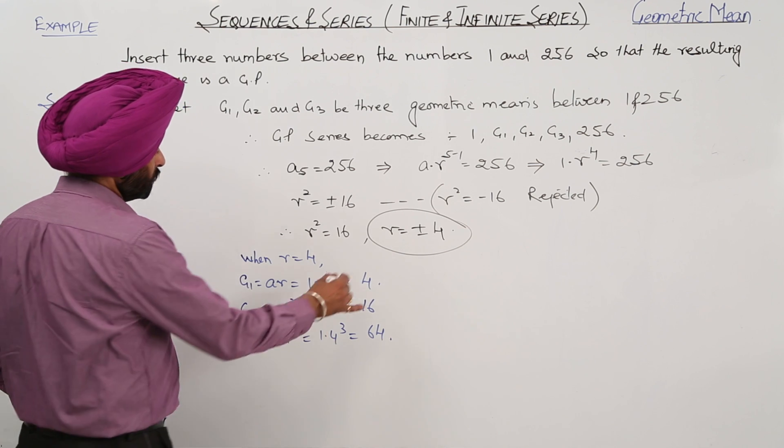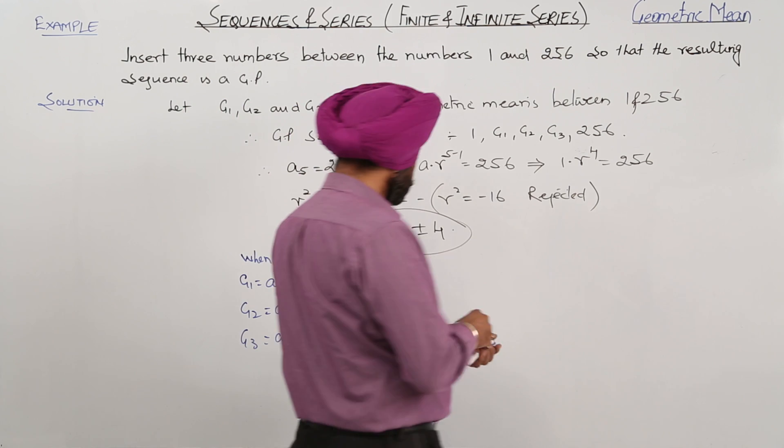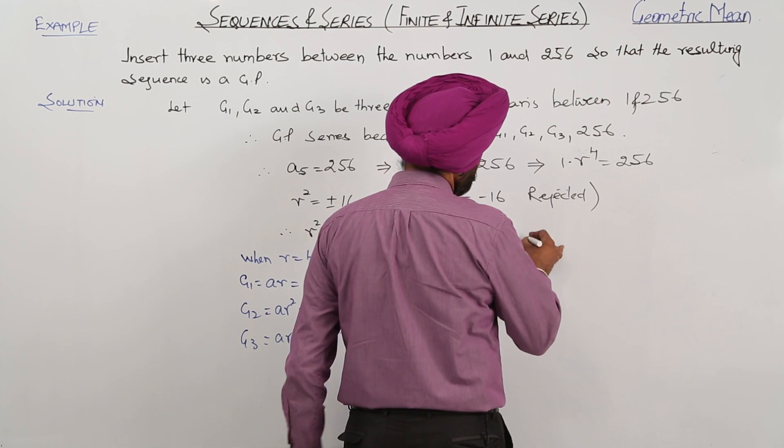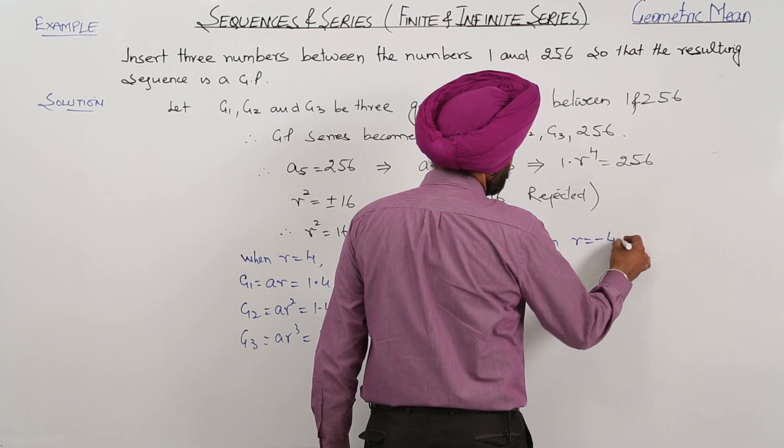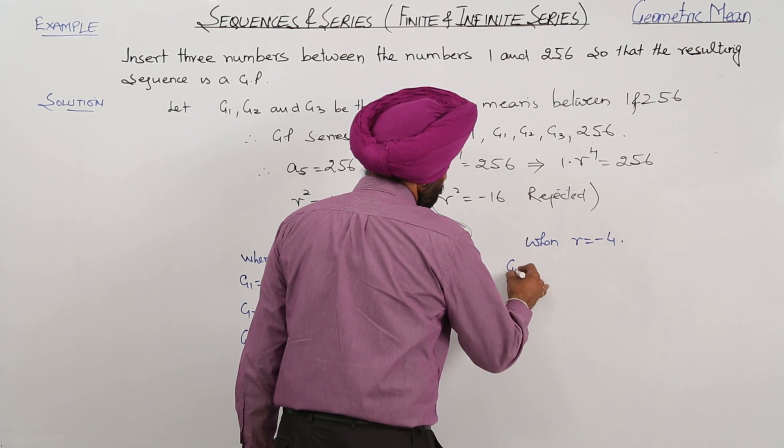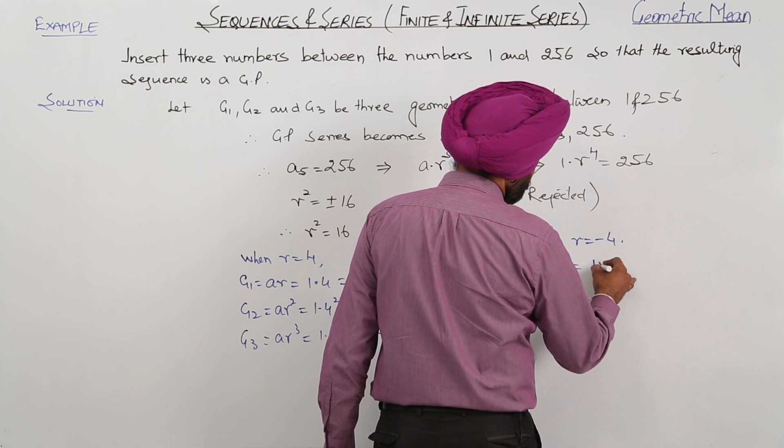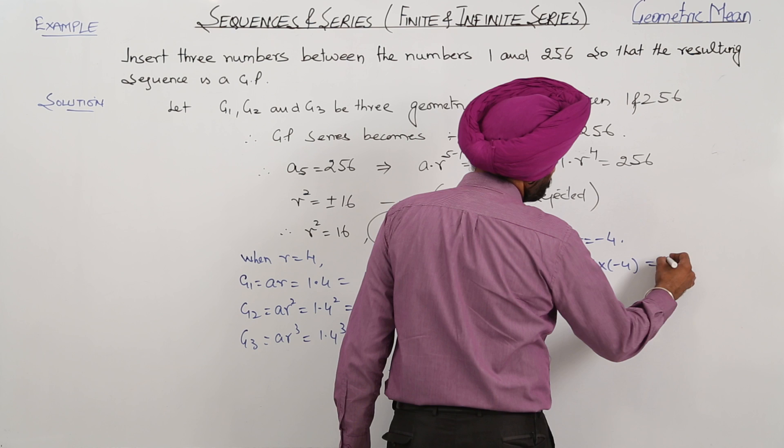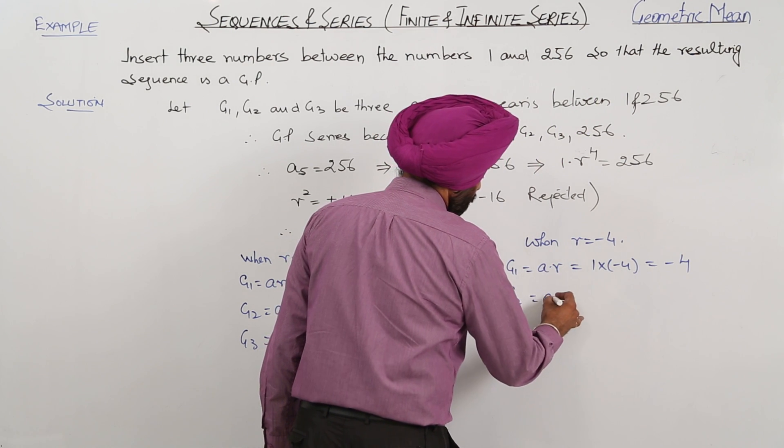So we got 3 GMs when R equals 4. Now when R is equal to negative 4, then G1 is equal to AR, this is equal to 1 times negative 4 equals negative 4.